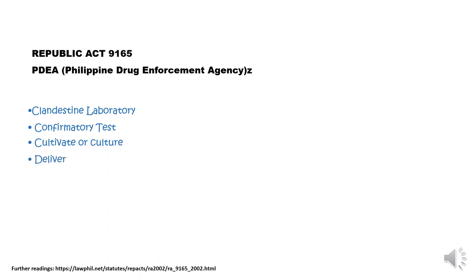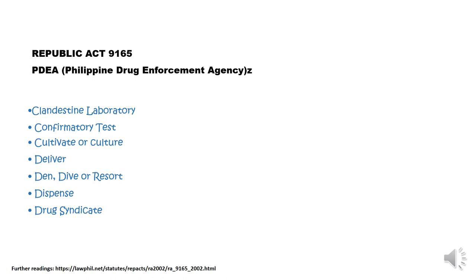Deliver refers to any act of knowingly passing a dangerous drug to another, personally or otherwise, and by any means, with or without consideration. Den, dive, or resort is a place where any dangerous drug and/or controlled precursor and essential chemical is administered, delivered, stored for illegal purposes, distributed, sold, or used in any form. Dispense refers to any act of giving away, selling, or distributing medicine or any dangerous drug with or without the use of prescription. Drug syndicate is any organized group of two or more persons forming or joining together with the intention of committing any offense prescribed under this act.